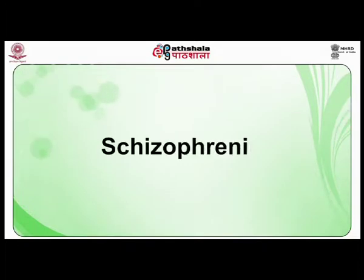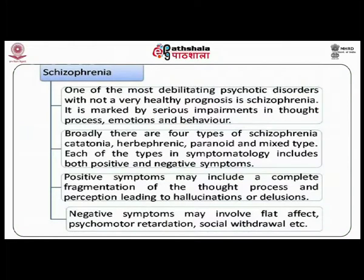Schizophrenia is the first disorder we will discuss. One of the most psychotic disorders with not a very healthy prognosis is schizophrenia. It is marked by serious impairments in thought process, emotions, and behaviors. Broadly, there are four types of schizophrenia: catatonic, hebephrenic, paranoid, and mixed type. Each type includes both positive and negative symptoms.